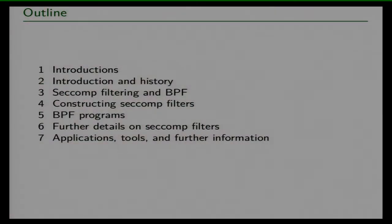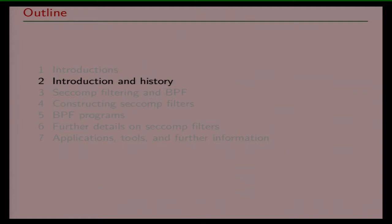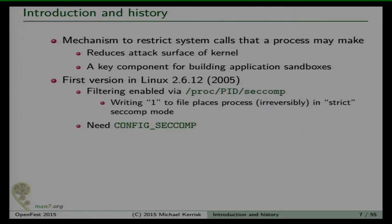I'll talk about a few things: a little bit of history to begin with. SecComp has actually been around in some form for a long time. The first version appeared around 10 years ago in the Linux kernel. It was very simple back then — you wrote a value into a slash-proc file, and after that your program was in so-called strict SecComp mode. You also needed a suitably configured kernel, as there's a kernel configuration option that turns SecComp on and off.